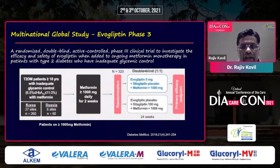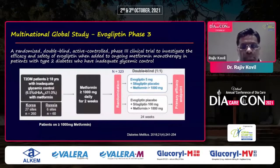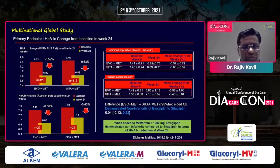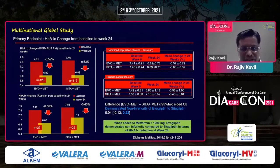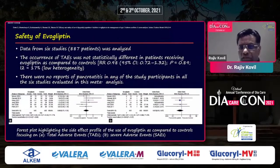This is a double-blind double-dummy study where you have an evogliptin placebo and a sitagliptin placebo, providing a placebo-controlled arm. Evogliptin is directly compared to sitagliptin on the background of metformin. The primary endpoint showed very similar HbA1c reductions whether looking at Korea plus Russia patient data or just Russian patients. Evogliptin demonstrated non-inferiority to sitagliptin in terms of HbA1c reduction.